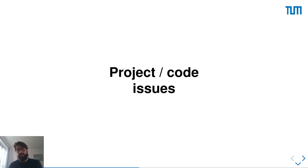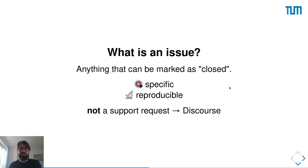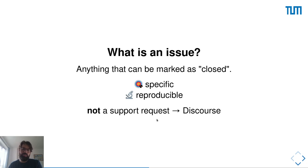If you have seen Precise on GitHub, you know that we use a lot of issues. You may be wondering what an issue is. To my view, anything that can be marked as closed is an issue. We want to distinguish code-related issues from support requests — if you have support requests, please write on this course. An issue needs to be specific — what happens when? — and reproducible, meaning if it is a bug, how did you end up seeing the symptoms, and what can we do to get the same behavior?